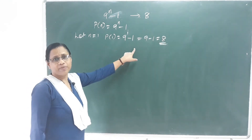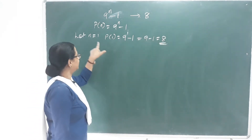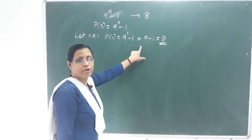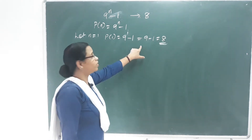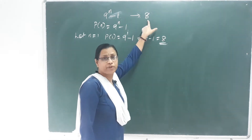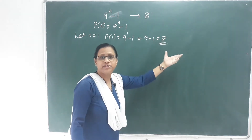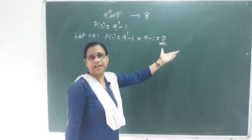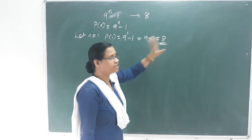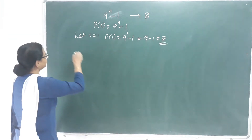The answer is 8, meaning 8 is a multiple of 8. Which is true — P of 1 is true. We write that 8 is a multiple of 8. That is the second step.